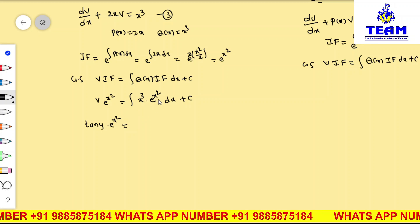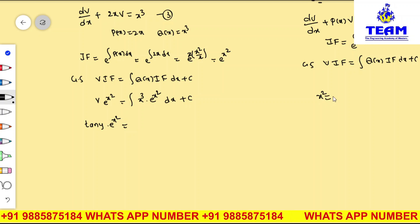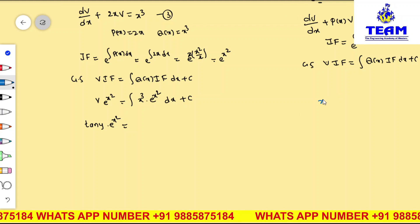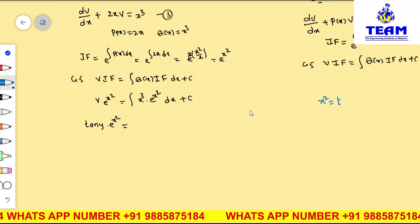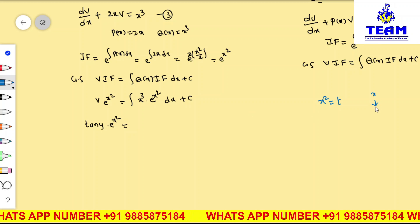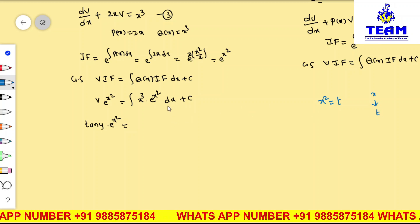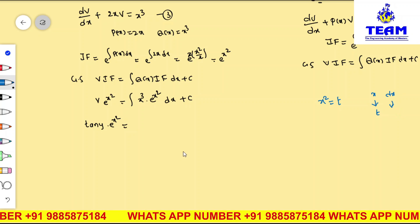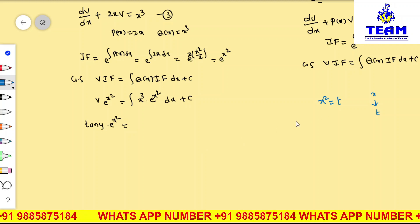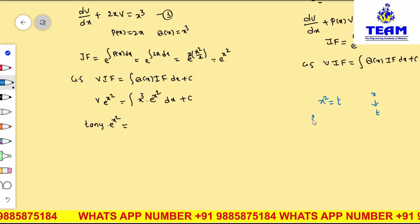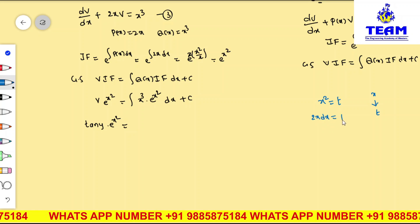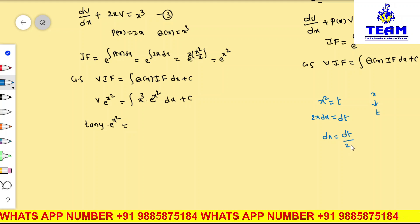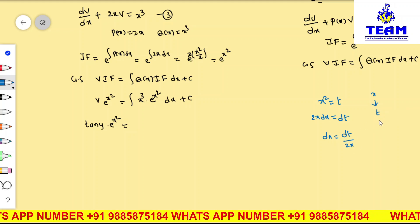For the integral of x³ · e^(x²) dx, we cannot integrate e^(x²) directly, so we use substitution. Let x² = t. Differentiating both sides: 2x dx = dt, therefore dx = dt/(2x). Since x² = t, we get x = √t, so dx = dt/(2√t).